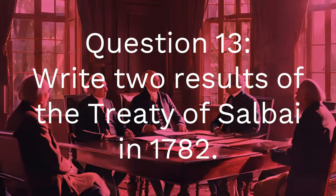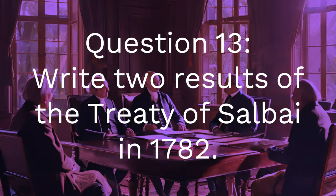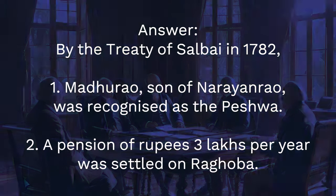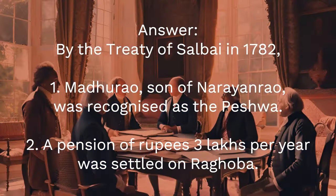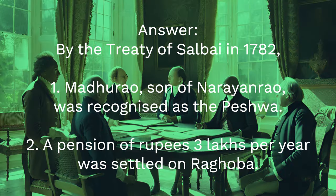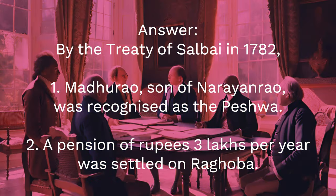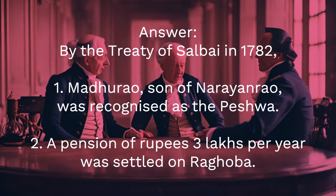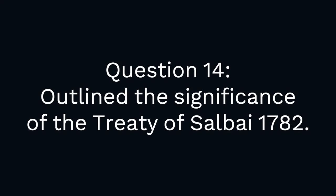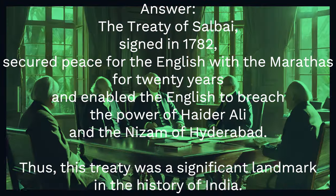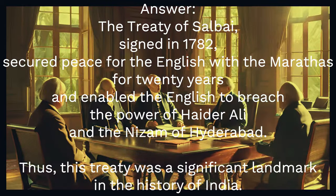Question 13: Write two results of the Treaty of Salbai in 1782. Answer: By the Treaty of Salbai in 1782: one, Madhav Rao, son of Narayanrao, was recognized as the Peshwa; two, a pension of rupees three lakhs per year was settled on Raghunath Rao.